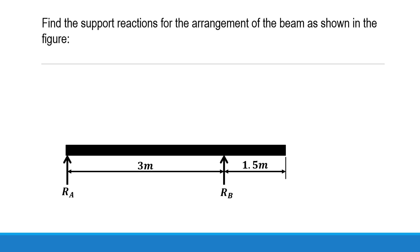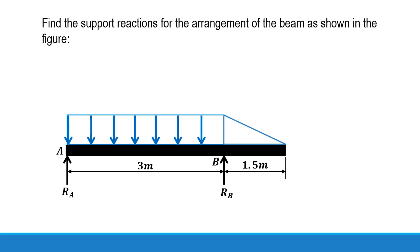The total span length is 3 plus 1.5, that is 4.5 meters. It is carrying a uniformly distributed load of 12 kilonewton per meter, and the UDL is acting over a length of 3 meters while the UVL is acting over a length of 1.5 meters.